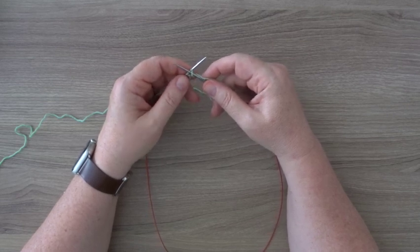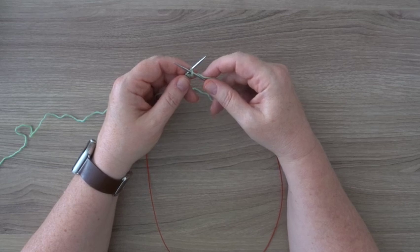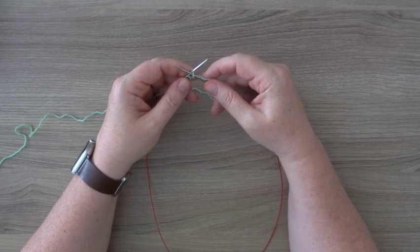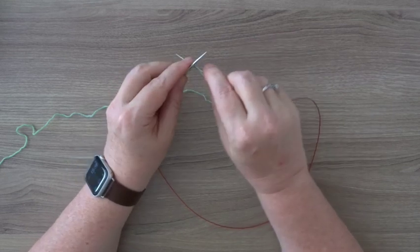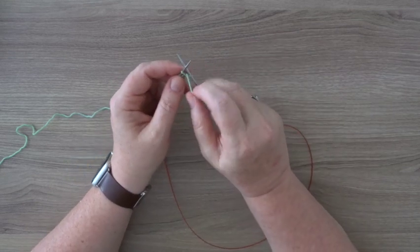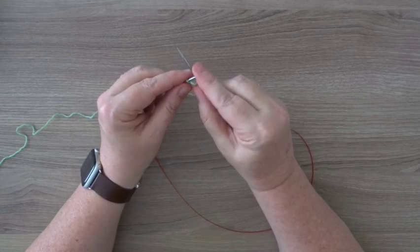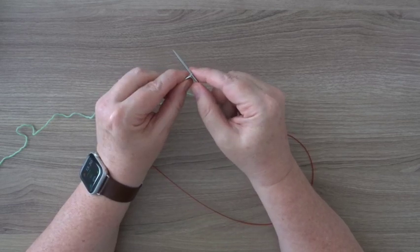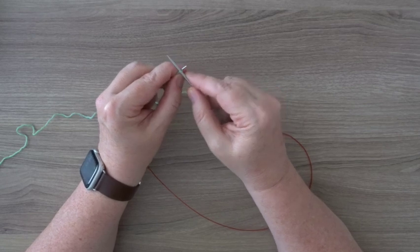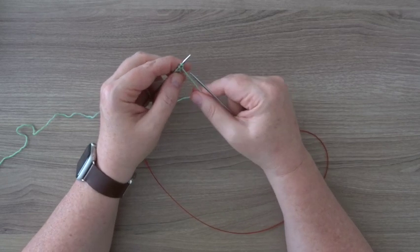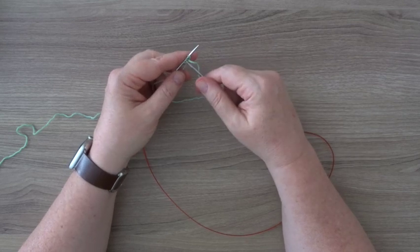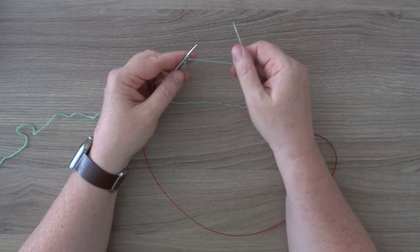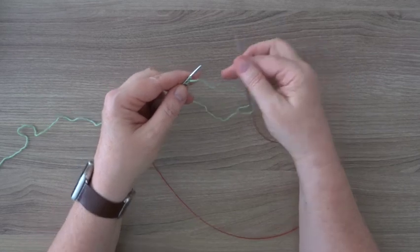Then, with your right needle tip, you go under the left needle, swivel it around, and put the stitch from back to front on the left-hand needle. Let's do that again. You see, we have cast on two stitches.